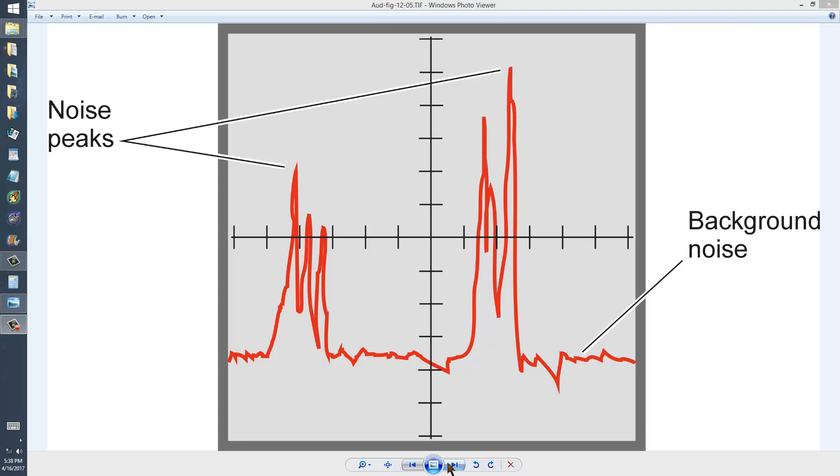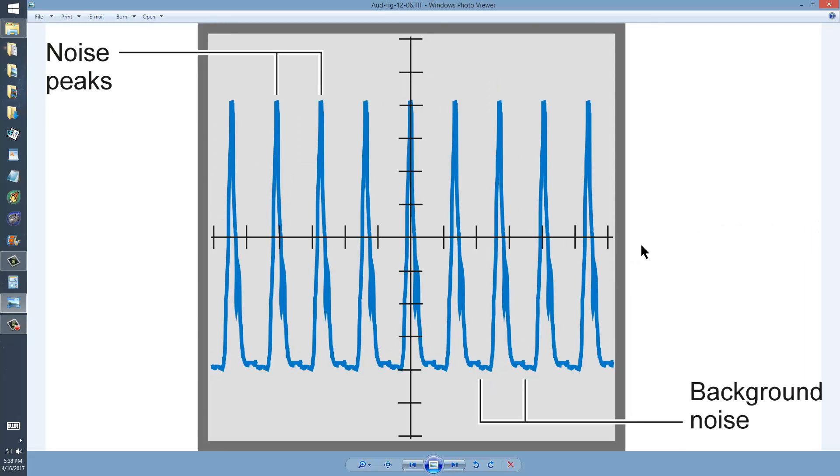The second type of noise is called impulse noise, and this is the kind of noise you might hear from a passing car or truck, or certain types of electrical appliances.